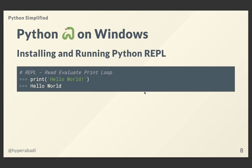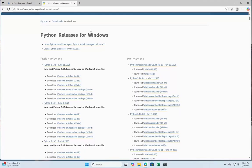Let's see how you can install and run Python on Windows. First we install it, then we can invoke the shell — also known as REPL. REPL stands for Read, Evaluate, Print, Loop: it reads the input you type, evaluates it, prints the result, then loops. Let's go to the Windows demo.